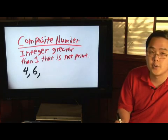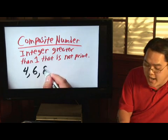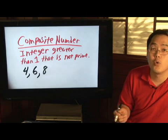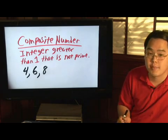Seven is a prime number, so it's not composite. But the number eight is because besides one and eight, two and four will go into eight as well. So eight is composite.